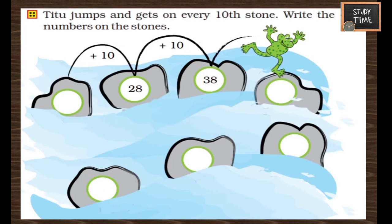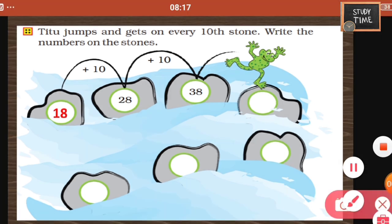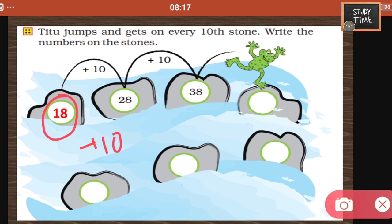A frog jumps and lands on every 10th stone. Write the numbers on the stones. Here it is 18 plus 10, giving 28; then 38, 48, 58, 68, and 78.